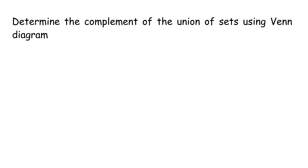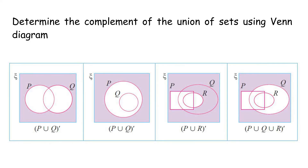Determine the complement of the union of sets using a Venn diagram. The complement of the union of sets A and B refers to all the elements not in set A and set B.